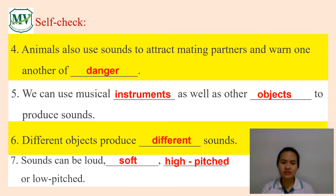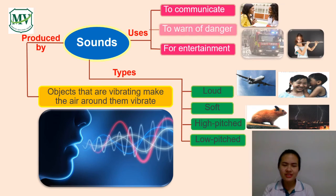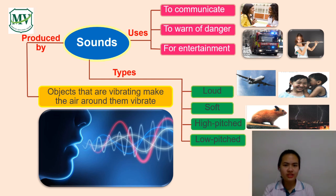Different objects produce different sounds. Sounds can be loud, soft, high pitch, or low pitch. The sounds produced by objects that are vibrating make the air around them vibrate. We can use sounds to communicate, to warn of danger, and for entertainment. The types of sounds can be identified as loud sound, soft sound, high pitch sound, and low pitch sound.